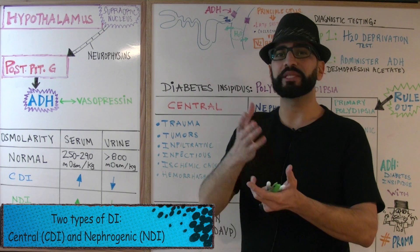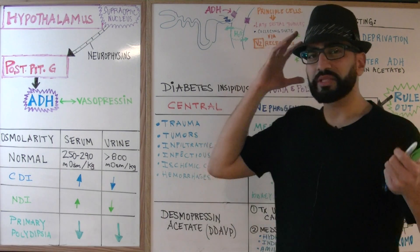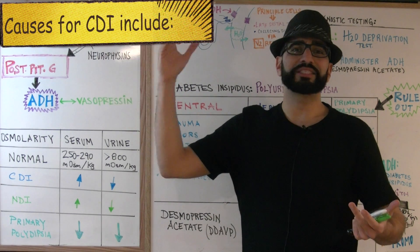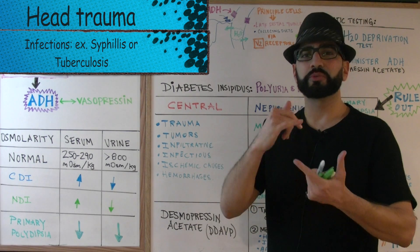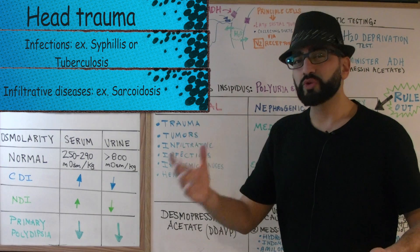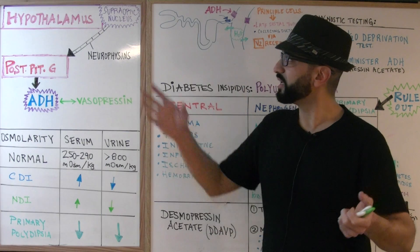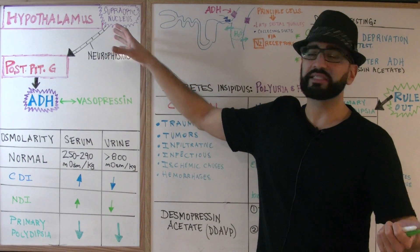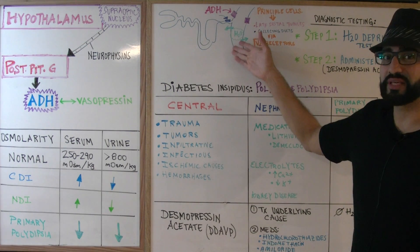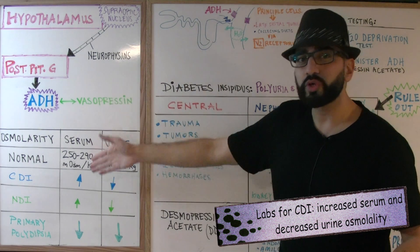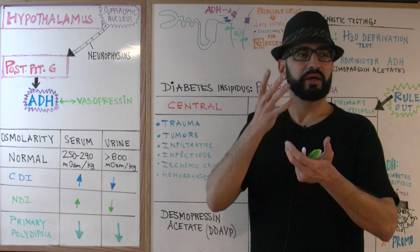If it happens in the brain, we call it central diabetes insipidus. Think about conditions that can affect the brain: the patient could have been in a serious accident, gone through trauma, had an infection such as syphilis or tuberculosis, an infiltrative disease like sarcoidosis, a tumor, ischemic changes, hemorrhagic bleeds in the brain. For whatever reason, the supraoptic nucleus is either not producing ADH or the posterior pituitary gland is not able to release it. So ADH never makes its way to the kidneys and water is never retained, causing high serum osmolality and low urine osmolality — the patient is unable to concentrate their urine.